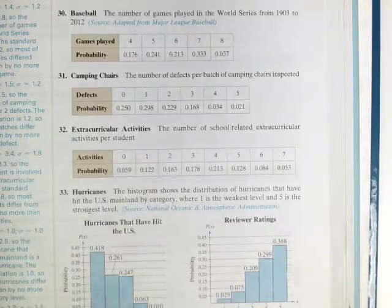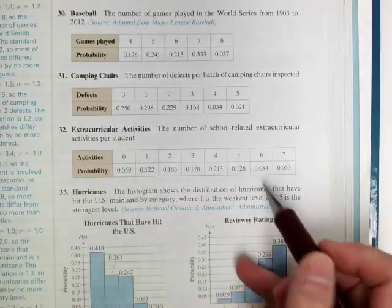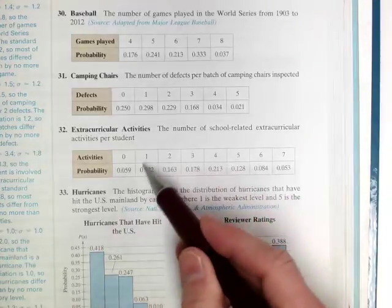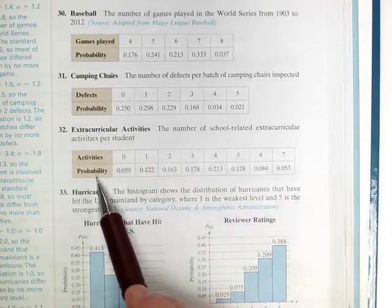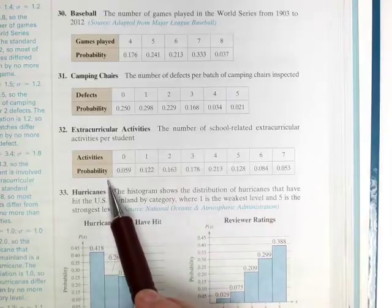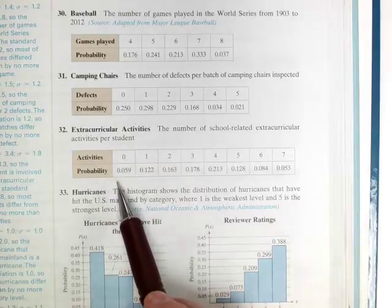All right, let's go over how to get the mean, standard deviation, and variance for a probability distribution. I'm looking at number 32, the number of school-related extracurricular activities per student.